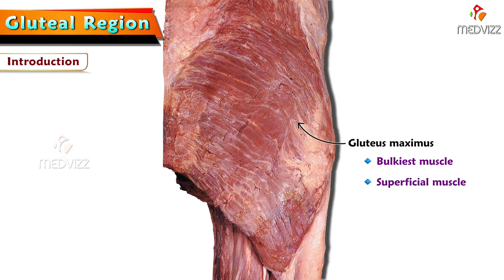The bulkiest muscle shown in this image is gluteus maximus. Gluteus maximus is the superficial muscle in the gluteal region.